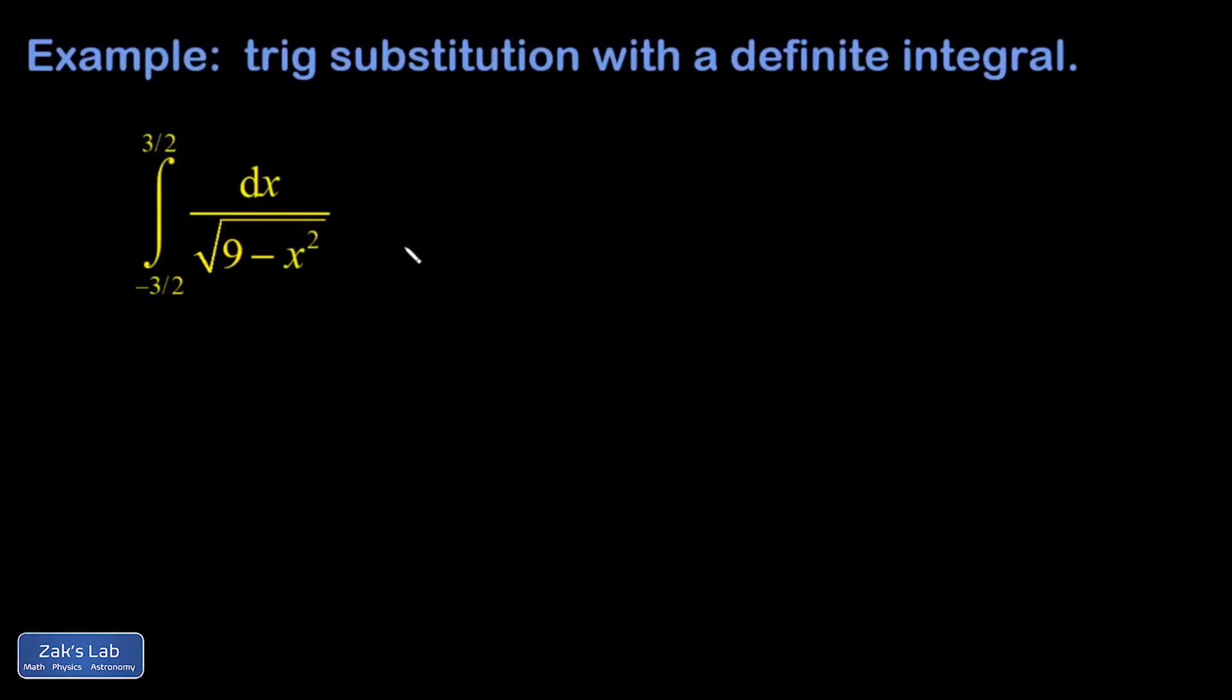Okay, let's do a trig sub integral real quick. The problem with this integral is we have this complicated thing stuck inside a square root in the denominator, and the whole point of a trigonometric substitution is to take a thing that looks like this and instead of having two terms, turn it into something with one term.